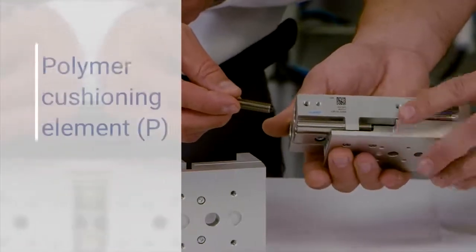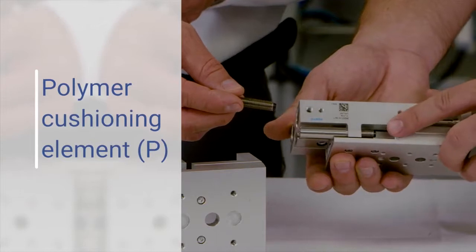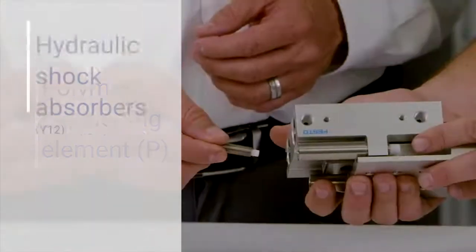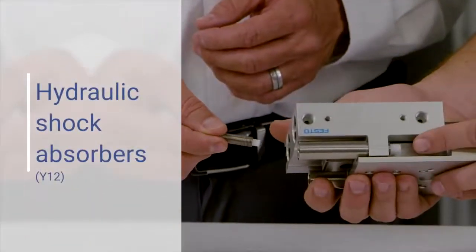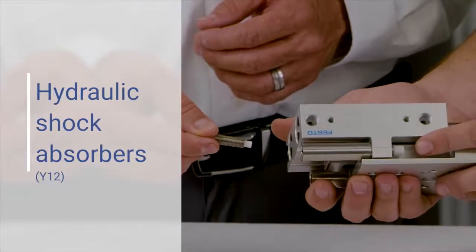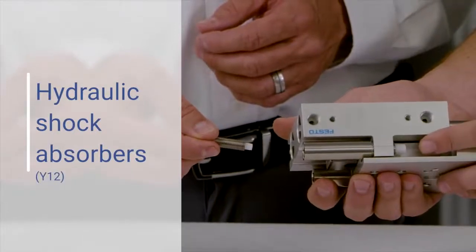For customer applications where cushioning and stroke adjustments are critical, the DGST has the answer. First, a polymer cushioning element for moderate levels of energy absorption, as well as hydraulic shock absorbers for applications demanding high levels of energy absorption and precise end positioning.